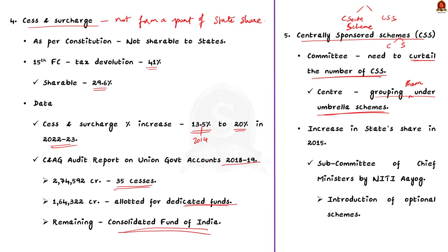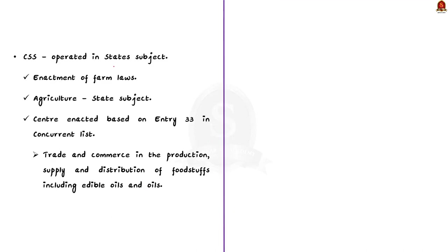The recommendation of the subcommittee of Chief Ministers, appointed by NITI Aayog, recommended a reduction in the number of schemes and the introduction of optional schemes. But the center did not act upon this recommendation. Moreover, most of the centrally sponsored schemes are operated in subjects which are exclusively included in the state list, meaning states are losing their autonomy in these areas as well.